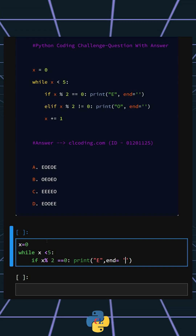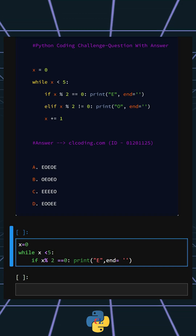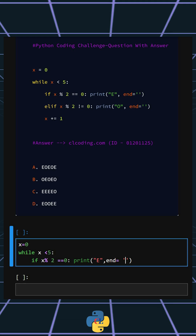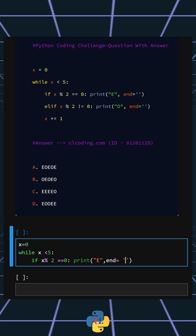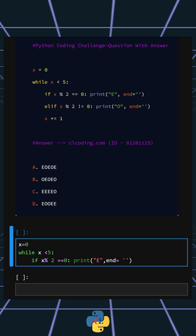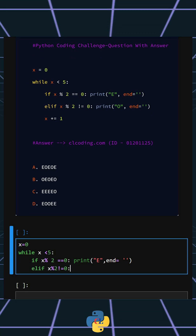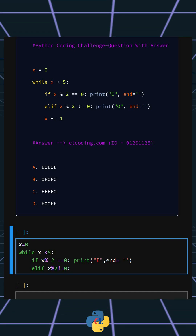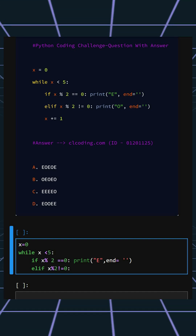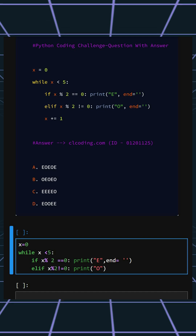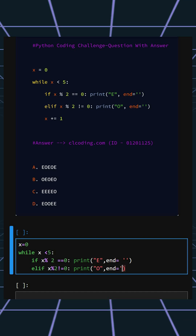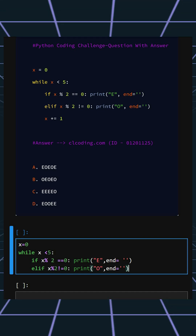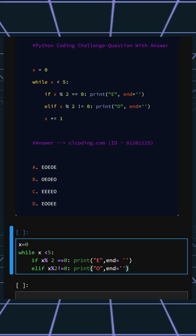So in this line, if X is even, it prints E without starting a new line — the `end=''` argument prevents a new line. Then it checks whether X is odd by verifying that the remainder when dividing by 2 is not 0. If X is odd, it prints O without starting a new line.